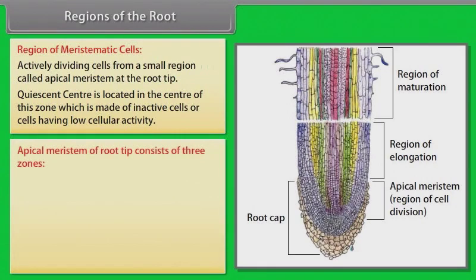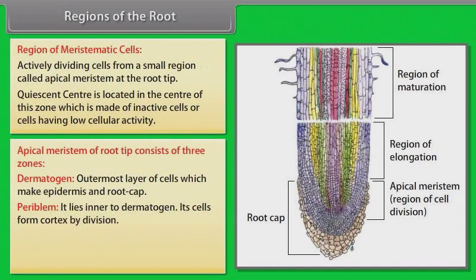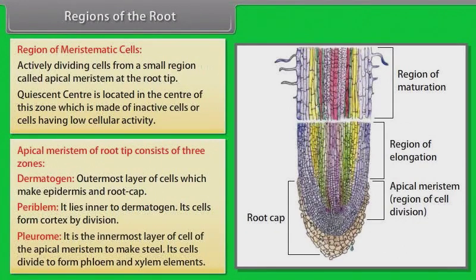The apical meristem of the root tip consists of three zones: dermatogen — the outermost layer of cells which make the epidermis and root cap; periblem — it lies inner to the dermatogen and its cells form cortex by division; and plerome — the innermost layer of cells of the apical meristem, whose cells divide to form phloem and xylem elements.